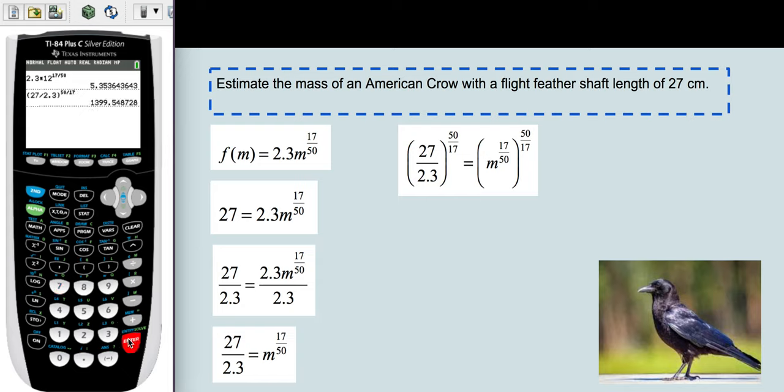When we do that, we get 1,399.5487-ish. We can do a little bit of rounding there. 1,399.55 grams would be our value for m. m is the mass, and if you remember back to a previous screen, the mass was measured in grams.